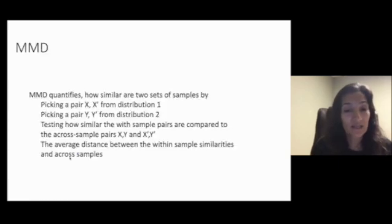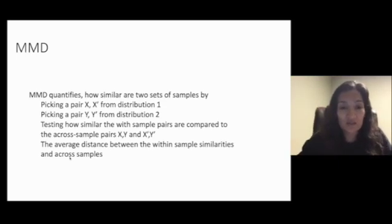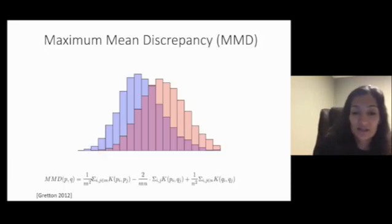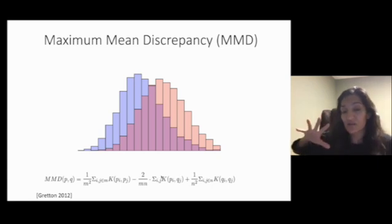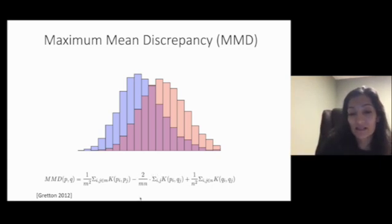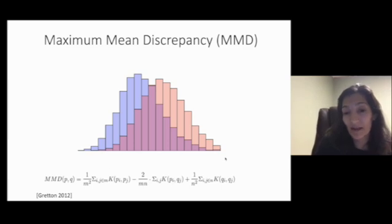This is how MMD works. You pick a pair of points from distribution one. You pick a pair of points from distribution two. And you test how similar the within sample pairs are based on kernel affinity to how similar cross-sample pairs are with the same kernel affinity. So let's look at this formula again. You have this kernel affinity between pairs of points in the same distribution, same with other distribution Q. And you subtract from that cross-distribution kernel affinities. And if in general your two distributions are separated more, then this number will be smaller, and these numbers will be higher, and will give a higher distance.